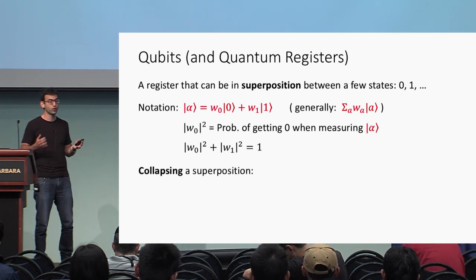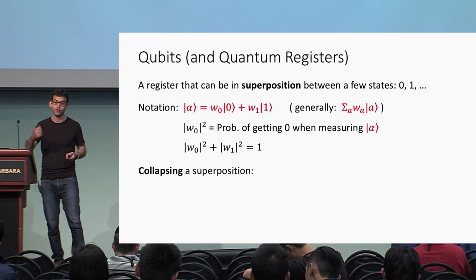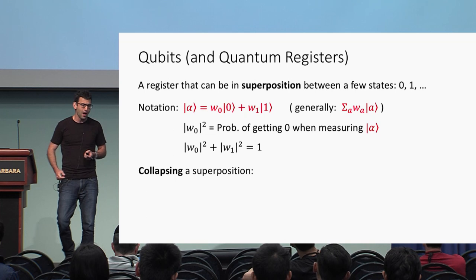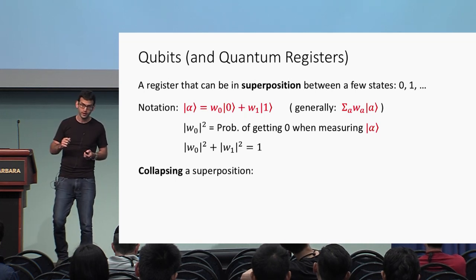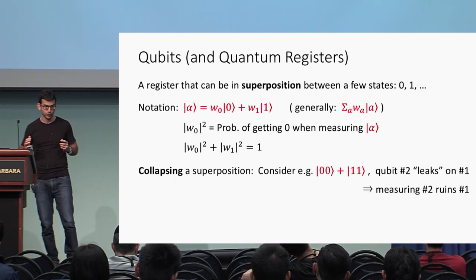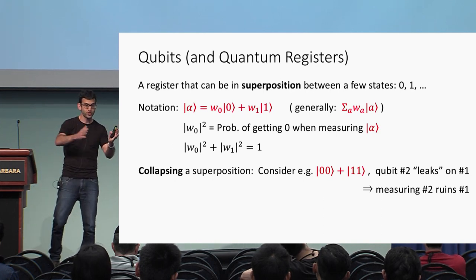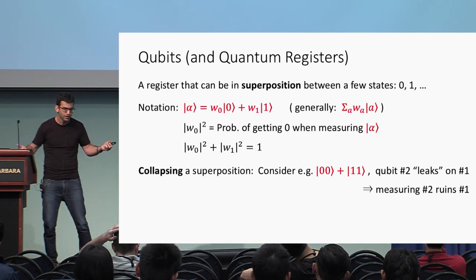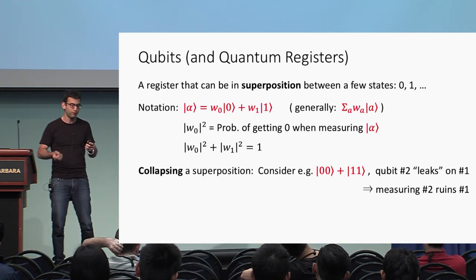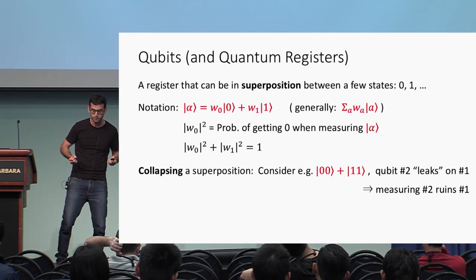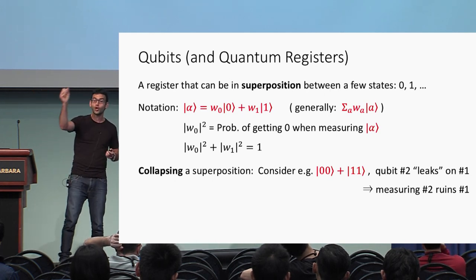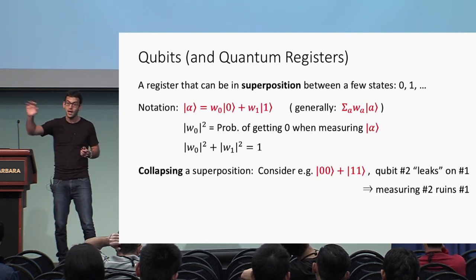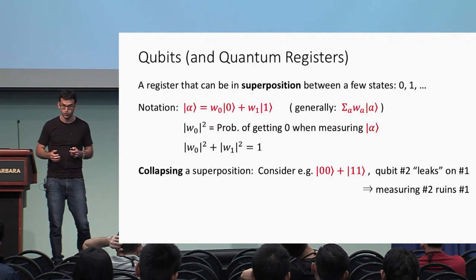When you measure a quantum register, you collapse its state to a classical state. But you can also collapse a register without measuring it directly if it's entangled with another register. For example, consider the two-qubit state |00⟩ + |11⟩ — these two qubits are entangled, so if you observe qubit number 2, it leaks information about qubit number 1. Measuring qubit 2 will collapse the state of qubit 1 as well, even though you didn't measure qubit 1 explicitly.